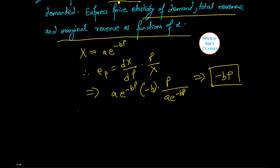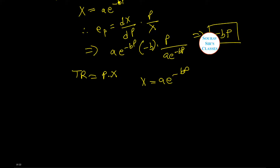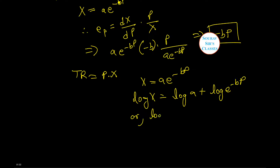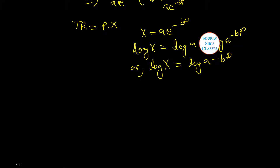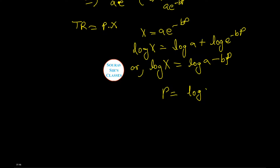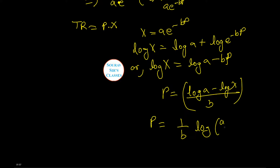Now for total revenue, TR equals P times x. From the demand function x equals A·e^(−BP), taking log on both sides: log x equals log A minus BP. Therefore solving for P gives P equals (log A minus log x) divided by B, which simplifies to P equals (1/B)·log(A/x).